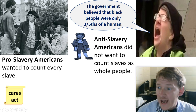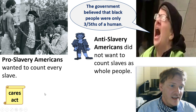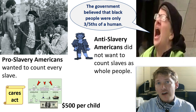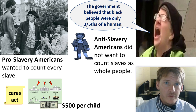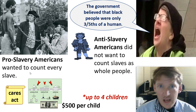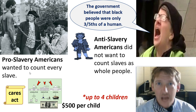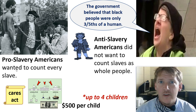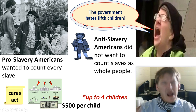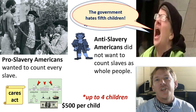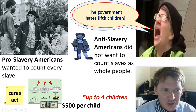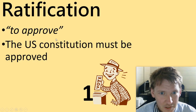Here's an analogy: the CARES Act said that for every child you get $500 during COVID, but only up to four children — after the fourth child, the government stops sending the $500. Does that mean the government hates fifth children? That's the same logic. It's a much more complex issue with a lot more detail to it — you can believe what you want to believe.